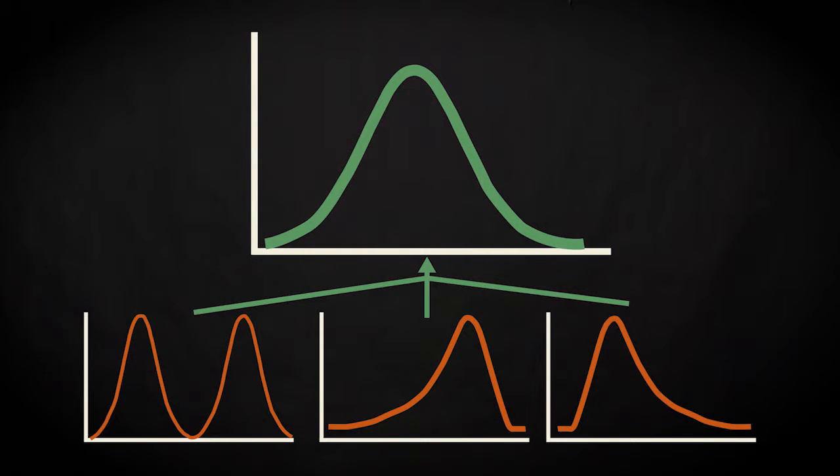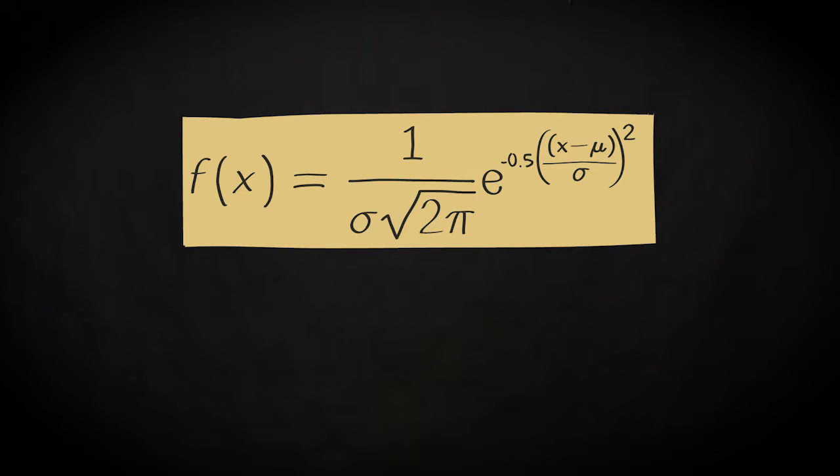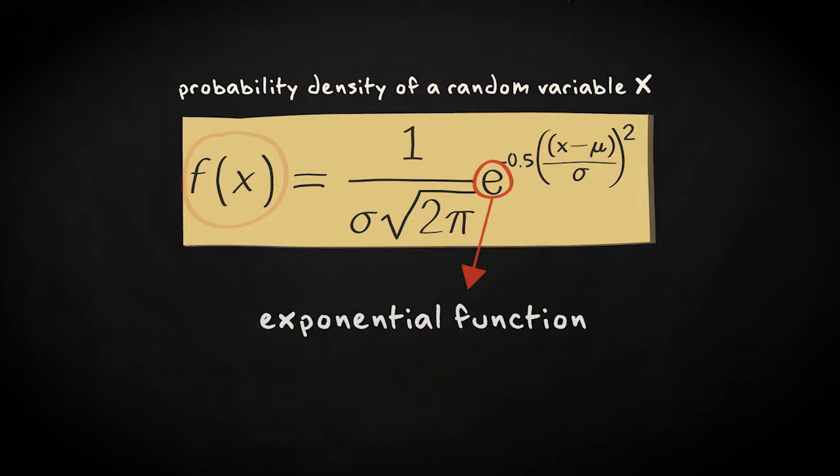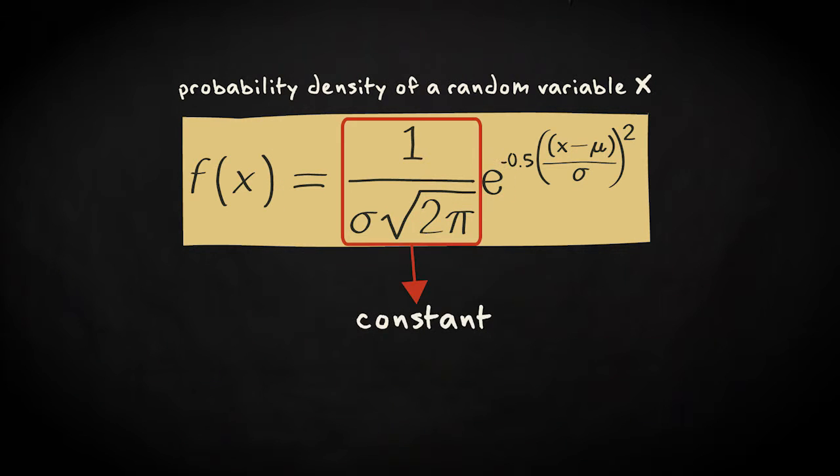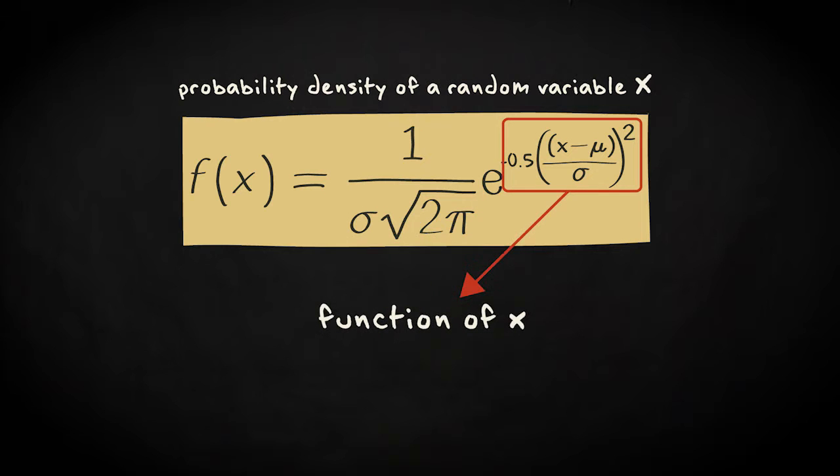However, let's not get carried away. I'll try to explain the equation by taking it apart. So this equation gives the probability density of a random variable x. The function is a kind of exponential function, with a constant in front, and a part in the exponent, which contains small x, the value that the random variable may take.